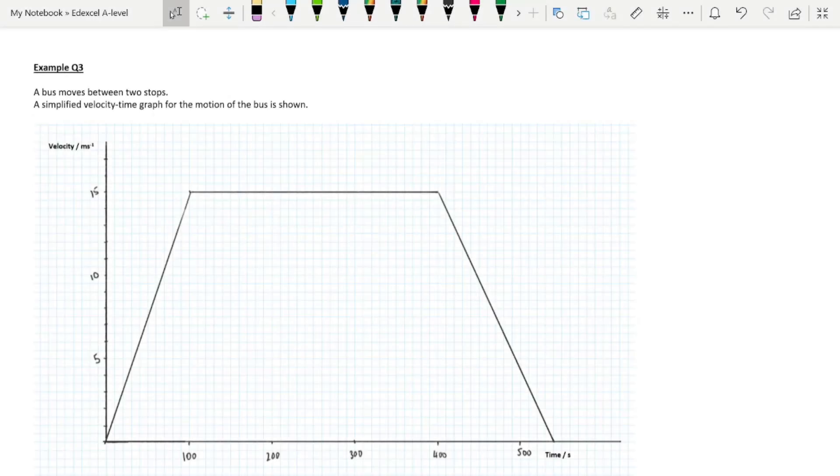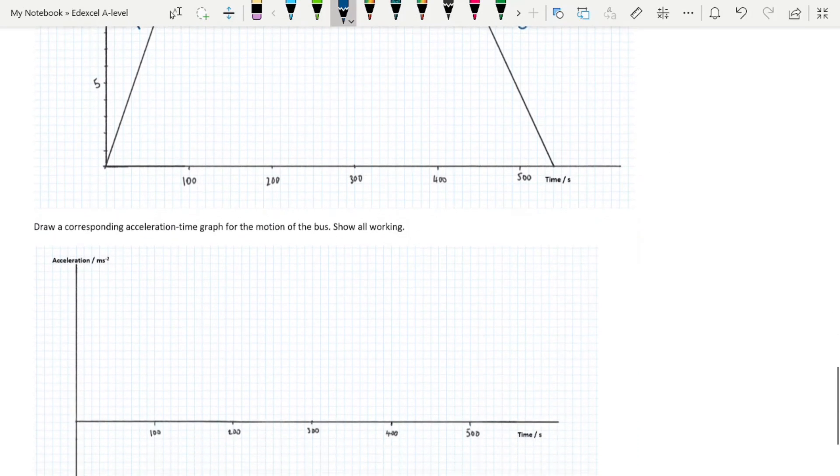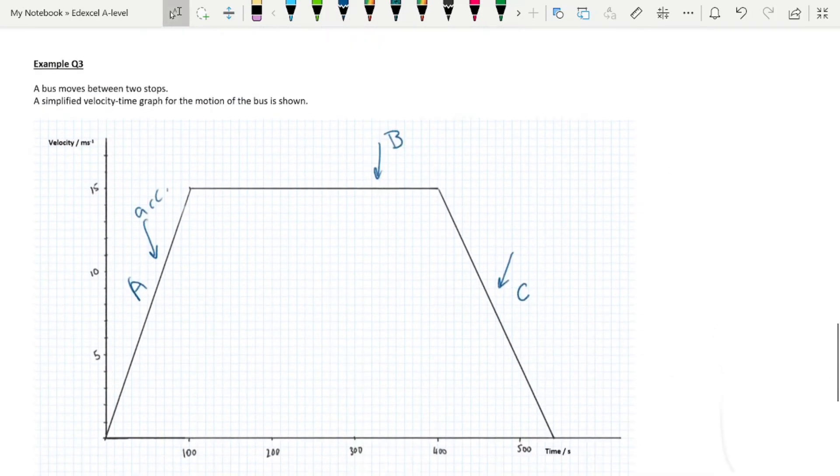Example question 3. The bus moves between two stops. Here's the velocity-time graph of the bus. We can see we've got some acceleration, and it's a constant acceleration because it's a straight line. We've got some constant speed, and we'll call them sections A, B, and C. And we've got some deceleration, a constant deceleration because it's a straight line. We have to draw a corresponding acceleration-time graph for the motion of the bus to show all working.